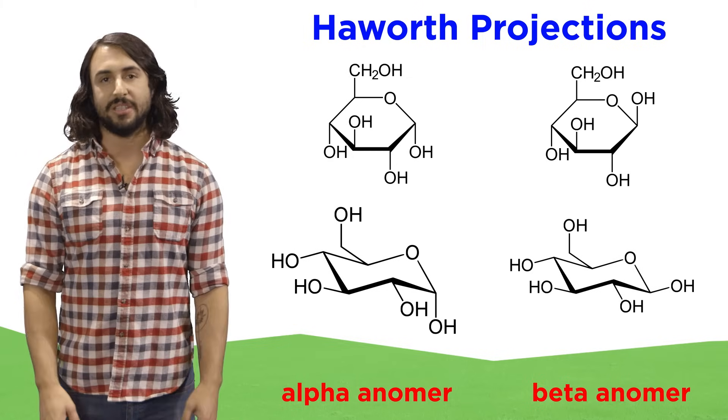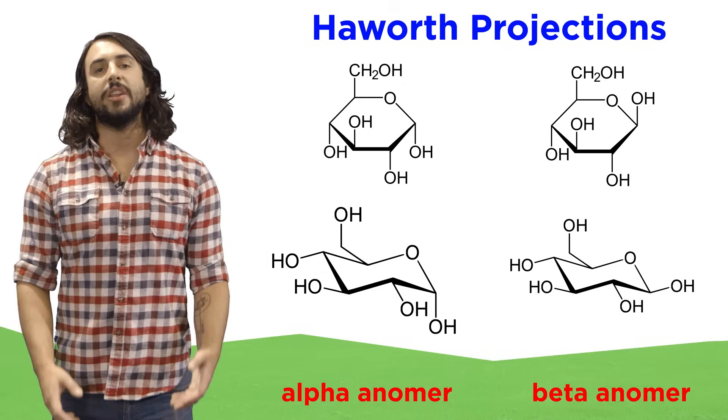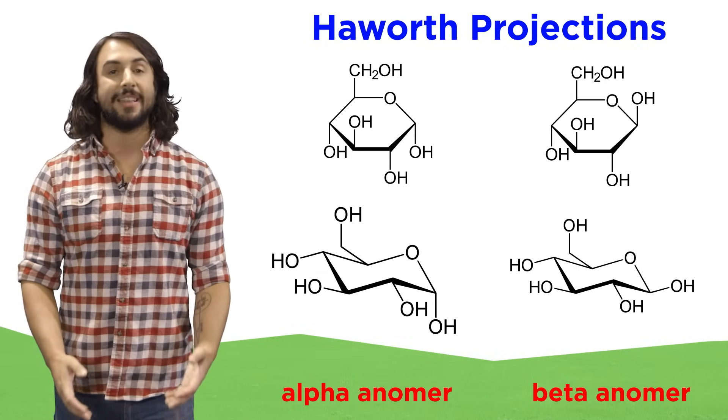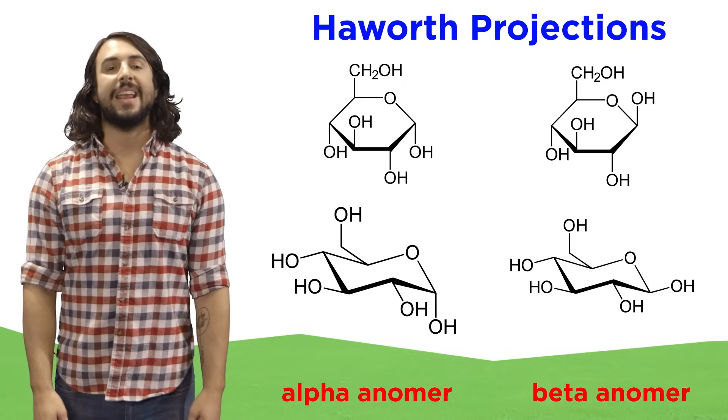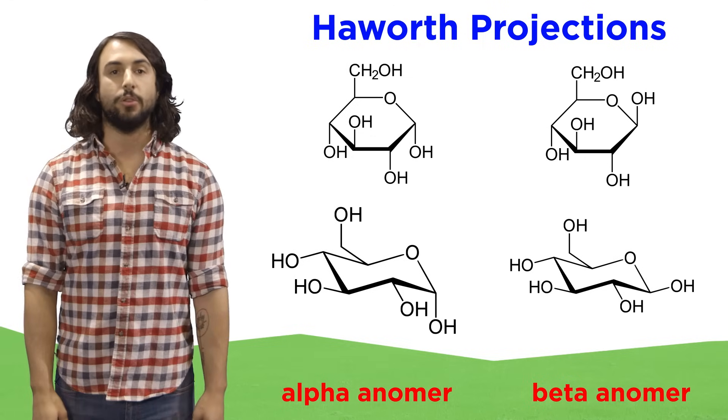This does not accurately display the true geometry of the molecule, because we know six-membered rings like these prefer to be in a chair conformation. But Haworth projections have other practical uses.